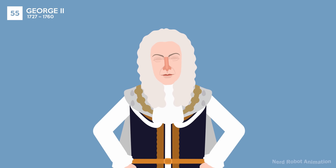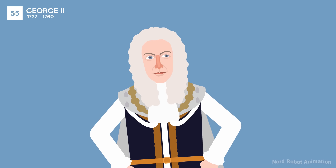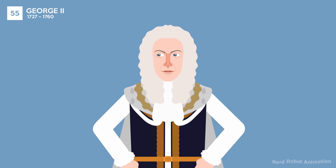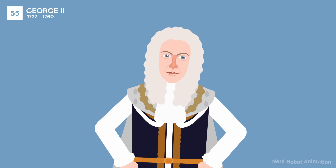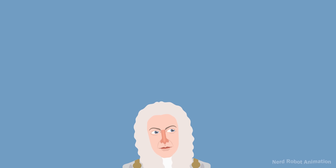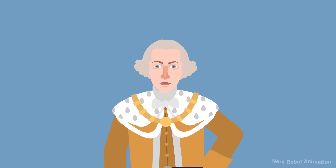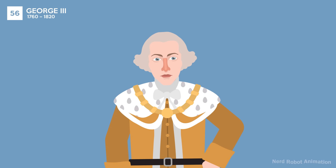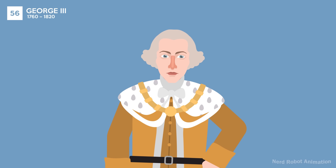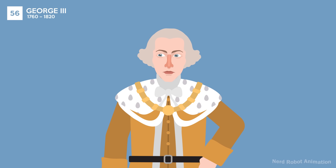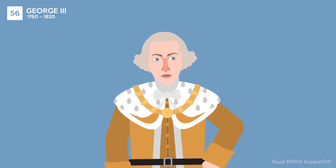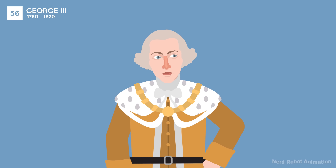George II was the last British monarch to lead troops into battle. His reign saw the expansion of the British Empire and the War of Austrian Succession. George III is known for his long reign, during which he suffered from periods of mental illness. His reign saw the loss of the American colonies and the Napoleonic Wars.